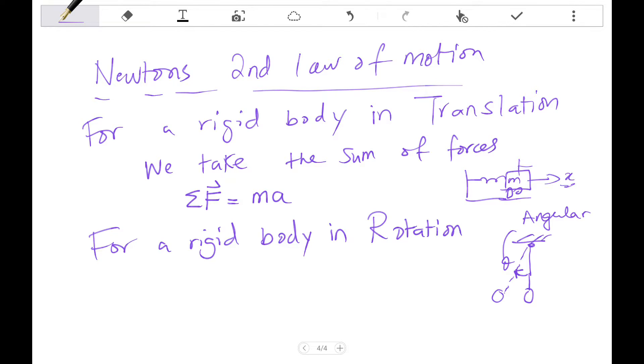For a rigid body in rotation we take the sum of moments, sigma M of t, which is basically J (that's polar inertia) times the angular acceleration. And that would be your equation. So we got that out of the way now.